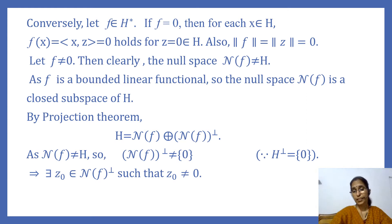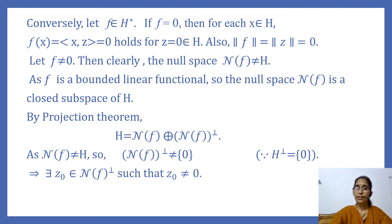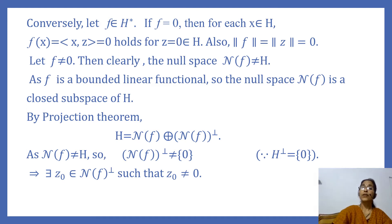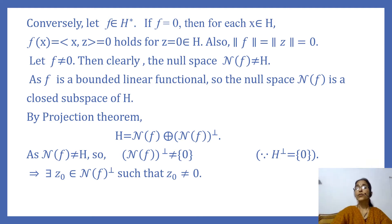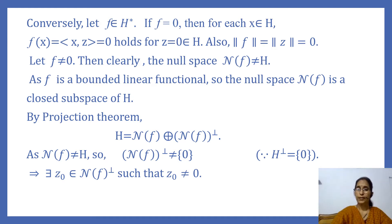Conversely, let F belong to H star. We have to show there exists a unique element Z in H such that F(X) equals ⟨X, Z⟩ for every X in H. Suppose F equals 0, meaning F(X) equals 0 for every X in H. Then F(X) equals ⟨X, Z⟩ equals 0 holds for Z equal to 0 — that is, there exists a unique element, the zero vector, in H. We also note that ‖F‖ equals 0 and ‖Z‖ equals 0, so ‖F‖ equals ‖Z‖ here.